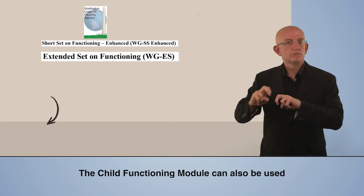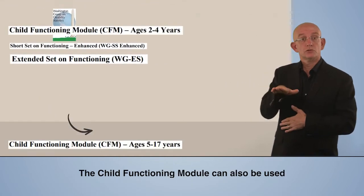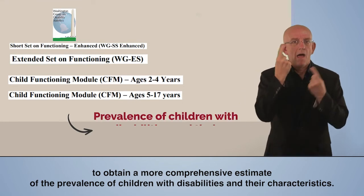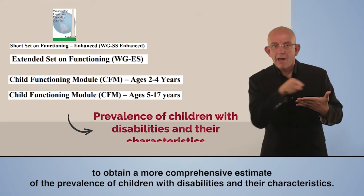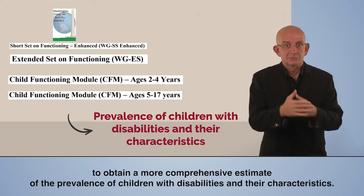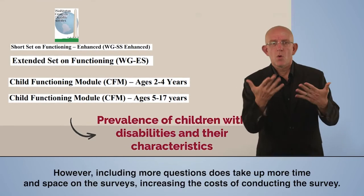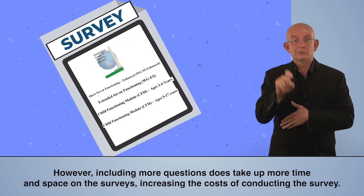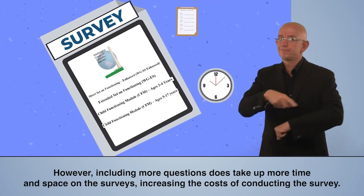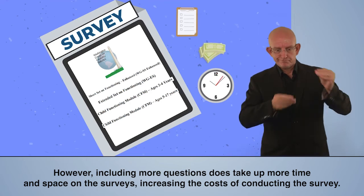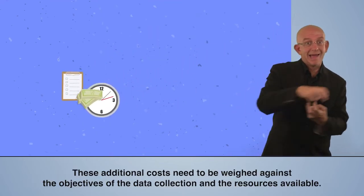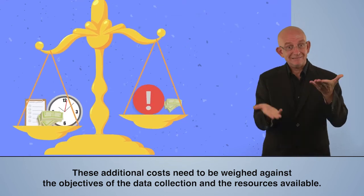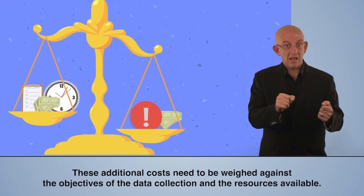The child functioning module can also be used to obtain a more comprehensive estimate of the prevalence of children with disabilities and their characteristics. However, including more questions does take up more time and space on surveys, increasing the costs of conducting the survey. These additional costs need to be weighed against the objectives of the data collection and the resources available.